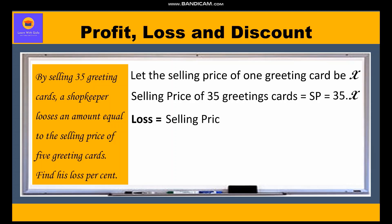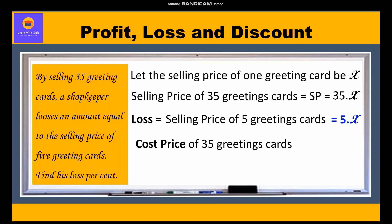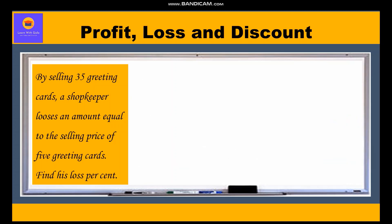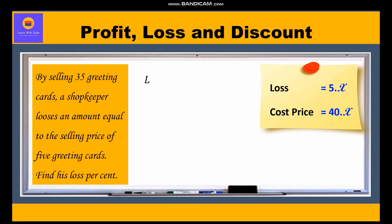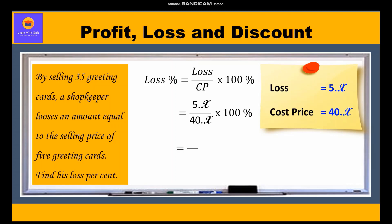Loss is given as equal to the selling price of 5 greeting cards, so it is 5X. Cost price of 35 greeting cards = selling price + loss = 35X + 5X = 40X. Now, loss percent = (loss / cost price) × 100 = (5X / 40X) × 100 = 12.5%. So the shopkeeper is making a loss of 12.5%.